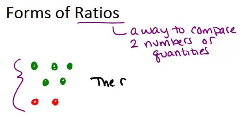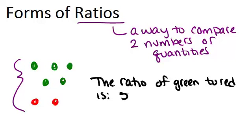The ratio of green to red is five over two. That's because there are five green dots and only two red dots.